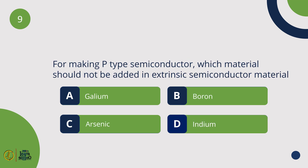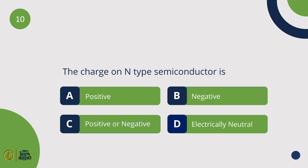For making a P-Type Semiconductor, which material should not be added in an extrinsic semiconductor? The charge on an N-Type Semiconductor is electrically neutral.